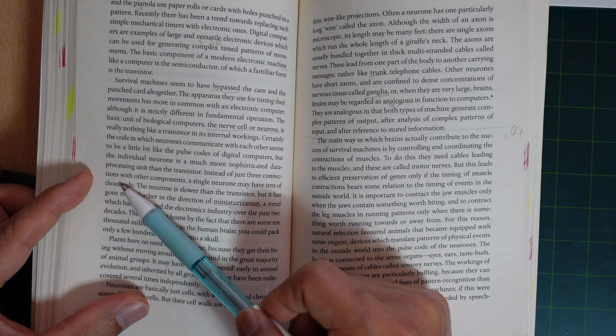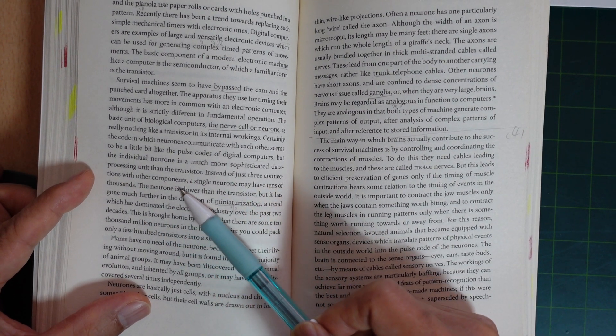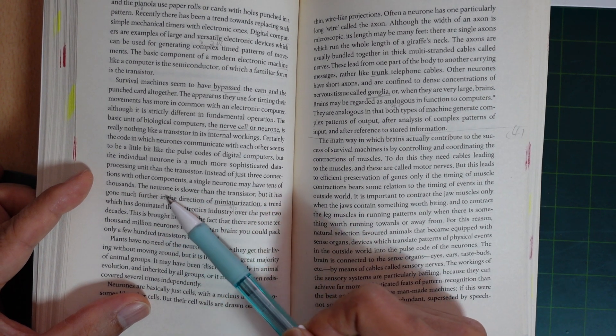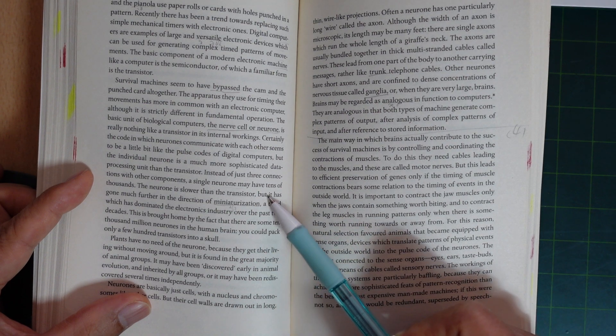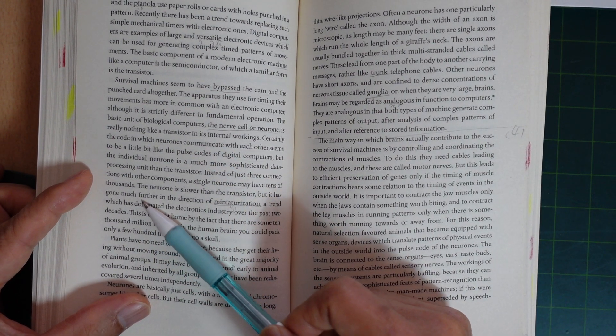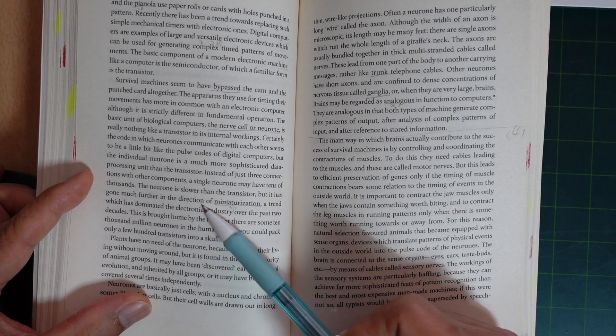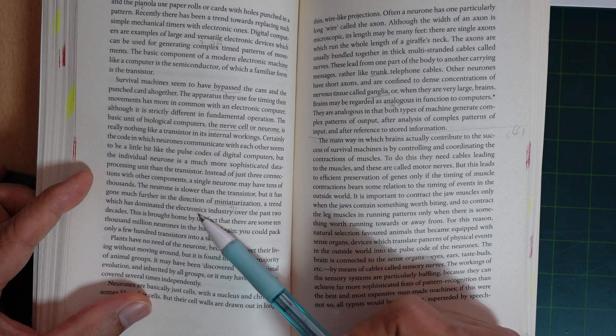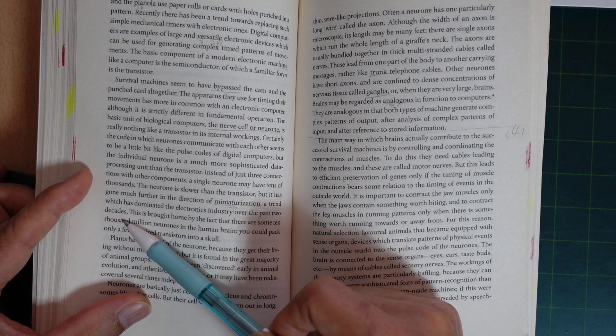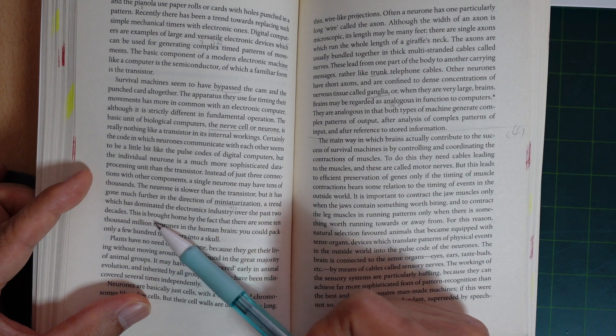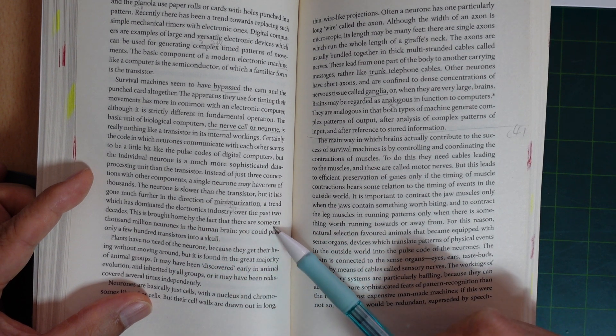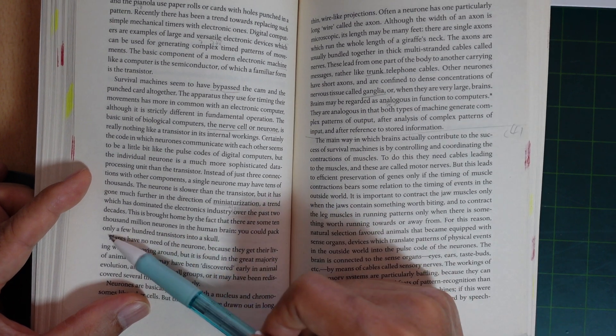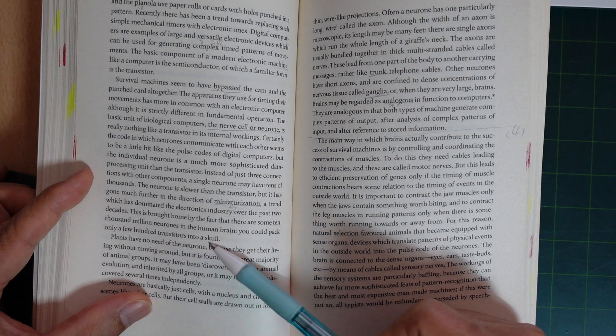Instead of just three connections with other components, a single neuron may have tens of thousands. The neuron is slower than the transistor, but it has gone much further in the direction of miniaturization, a trend which has dominated the electronics industry over the past two decades. This is brought home by the fact that there are some ten thousand million neurons in the human brain. You could pack only a few hundred transistors into a skull.